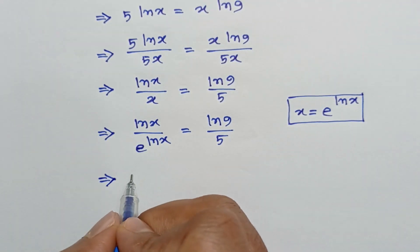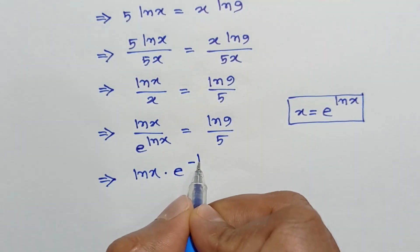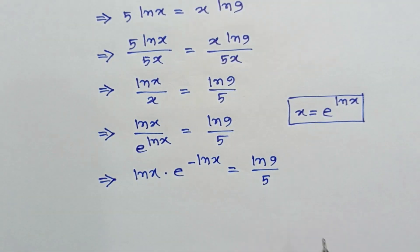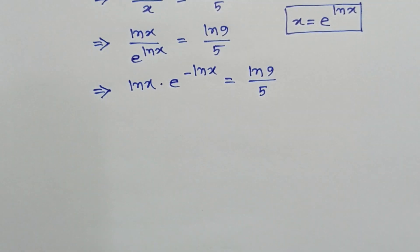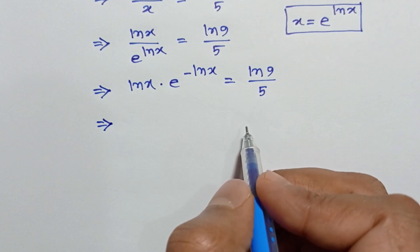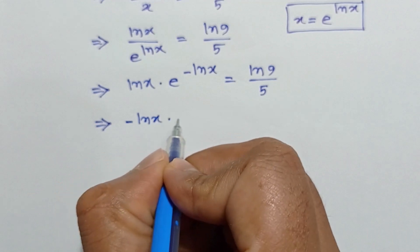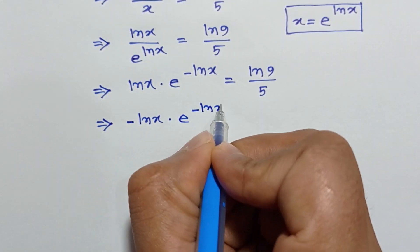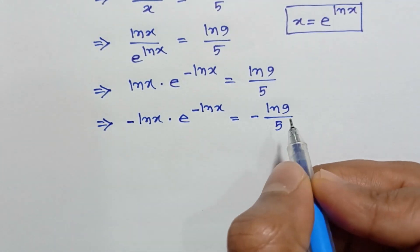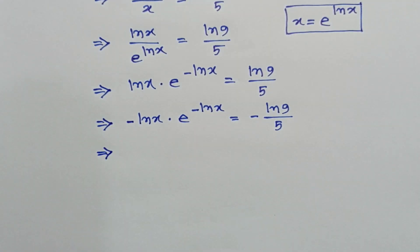This can be rewritten as ln x times e to the power negative ln x is equal to ln 9 over 5. Multiplying both sides by negative 1, we get negative ln x times e to the power negative ln x is equal to negative ln 9 over 5.